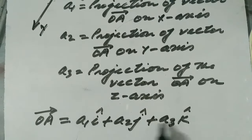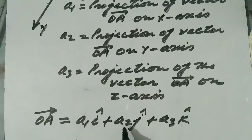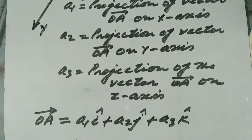So this is how we represent a vector in three-dimensional space with reference to three mutually perpendicular straight lines.